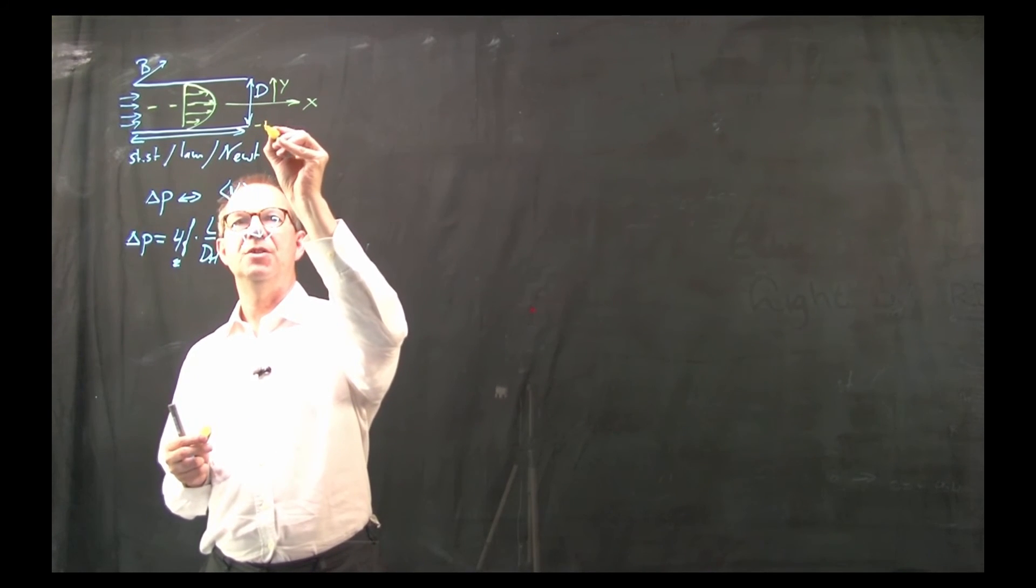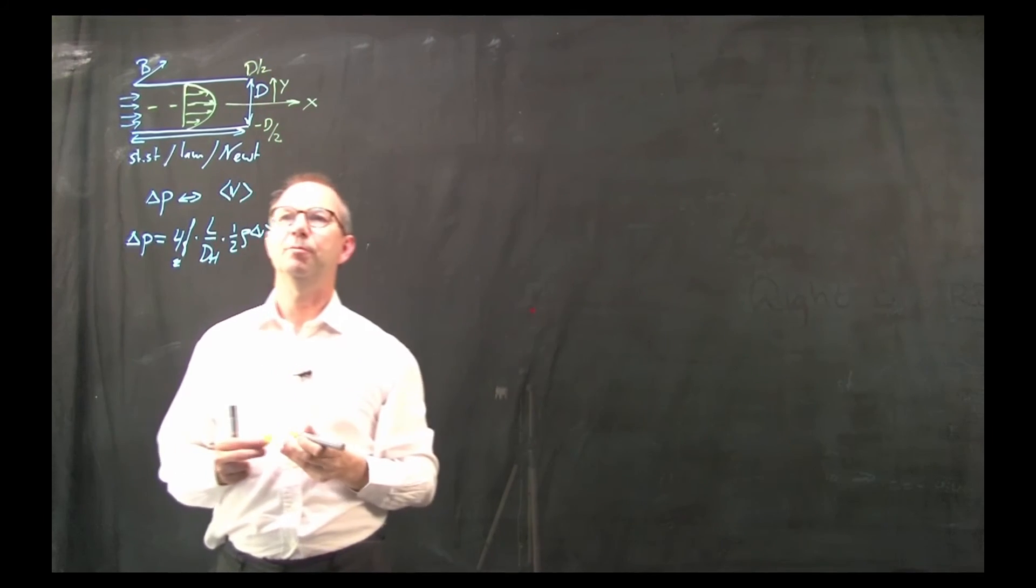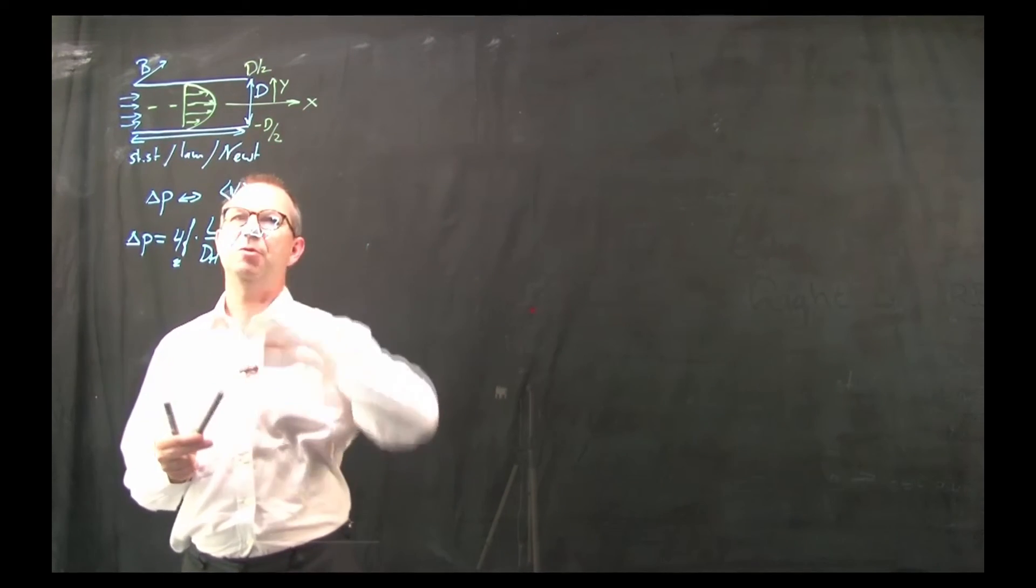So this is minus d over 2 and this is d over 2 itself. The x-axis runs between the plates.